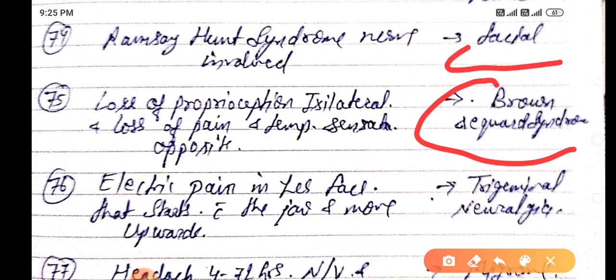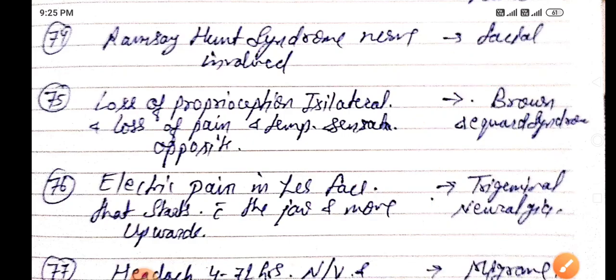Electric pain in the face that starts with the jaw and moves upward is due to trigeminal neuralgia.